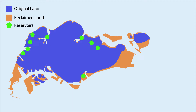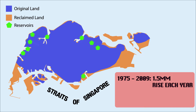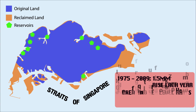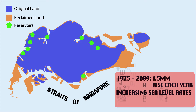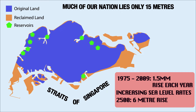Sea level in the Straits of Singapore has been rising. Between 1975 and 2009, sea level in the Straits rose at an average rate of 1.5 mm each year. There is an increasing trend in sea level rising rates here. According to worst possible projections, we could see a 6-metre rise by the year 2500. Much of our nation lies only 15 metres above mean sea level, with about 30% of our island being less than 5 metres above mean sea level, hence proving Singapore's vulnerability towards sea level rise.